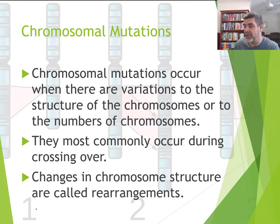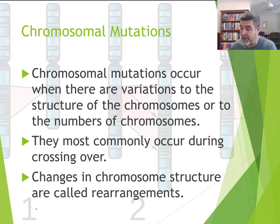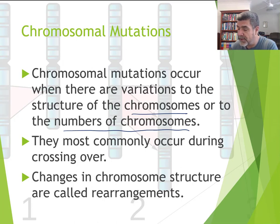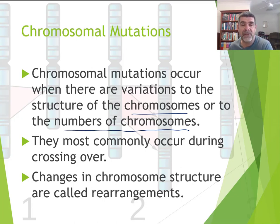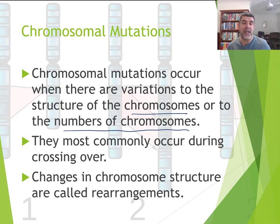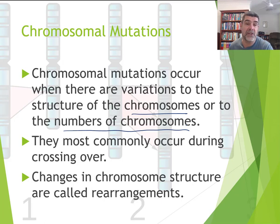Chromosomal mutations occur when there are variations to the structure of the chromosomes, or even to the numbers of chromosomes. This is one of the reasons why I used the term genic mutations in the last video — to help you distinguish between mutations that have an impact on just one gene, and those that potentially impact many genes. If mutations occur in the chromosomes, they can affect quite a large number of different genes.